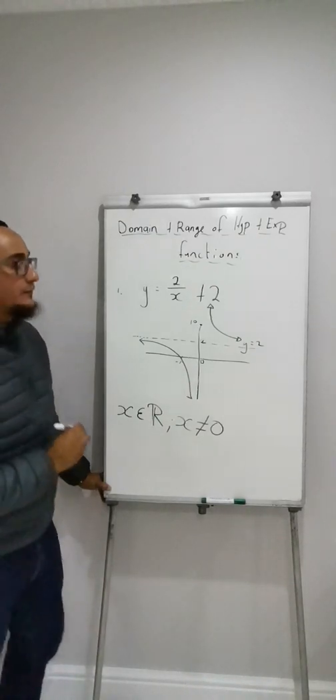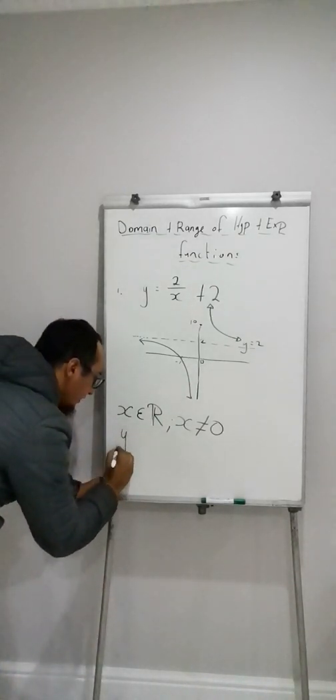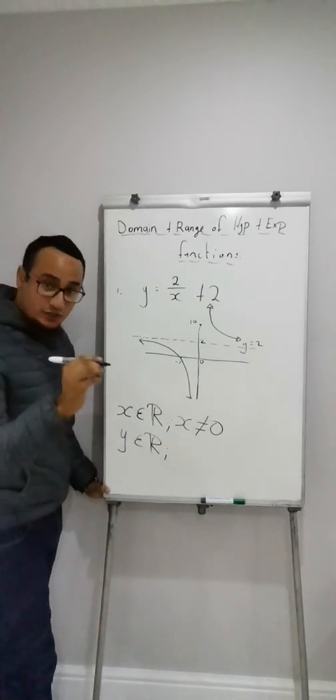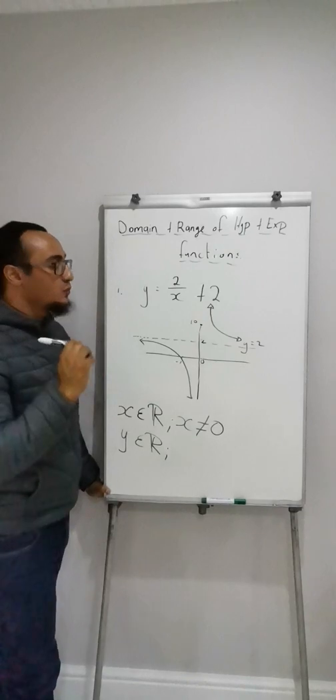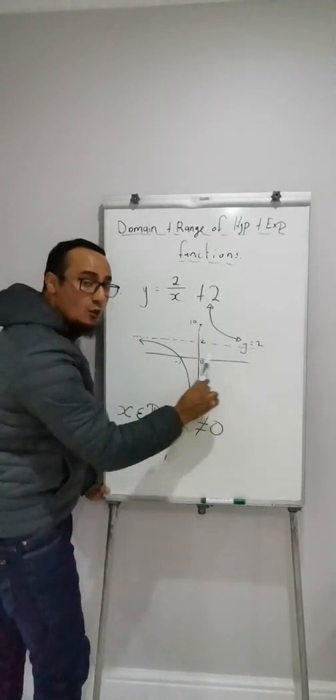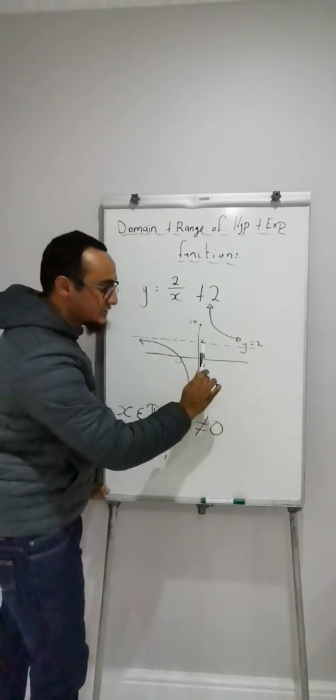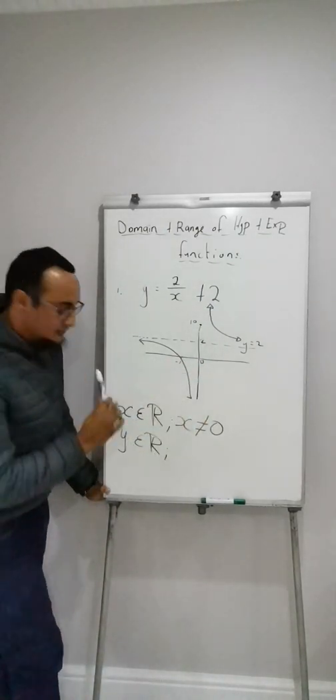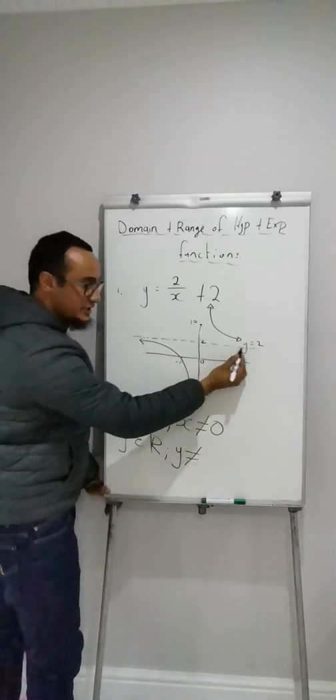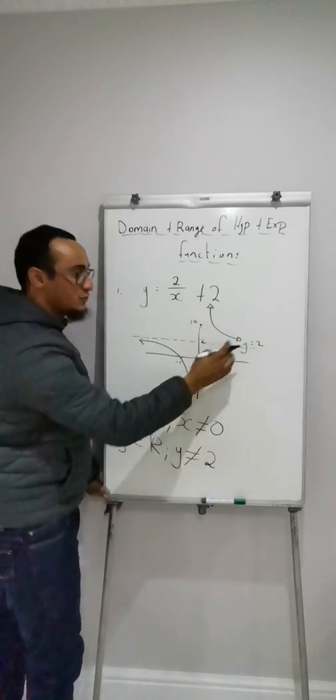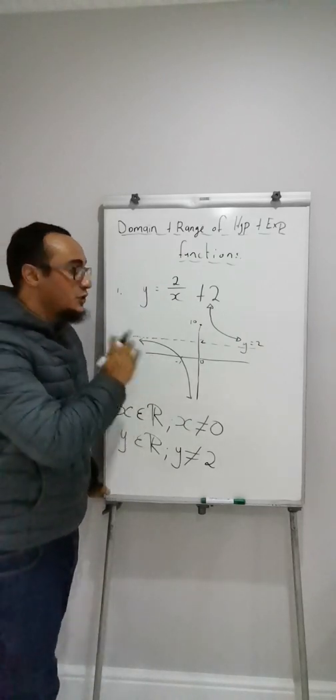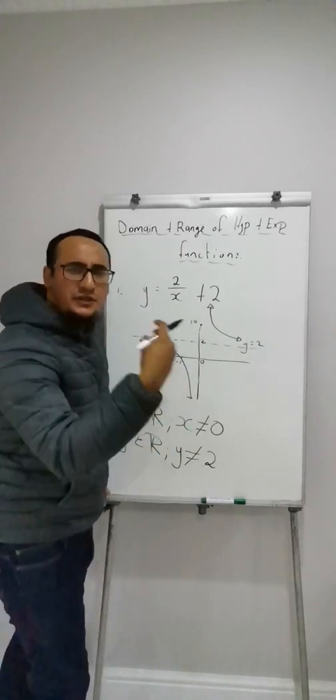Y is an element of real numbers and the restriction over here is the graph or y will never ever touch my asymptote line. Whatever my asymptote line is, my graph will never touch it. So y is not equal to my asymptote. In this case, my asymptote is positive 2. If it was negative 2, it will not equal to negative 2. If it was positive 10, it will not be equal to positive 10 and you get the picture.